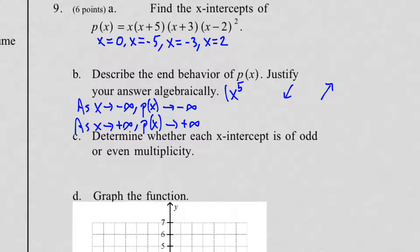Part C: determine whether each x-intercept is of odd or even multiplicity. Multiplicity means how many times that x-intercept occurs in your function. For example, x is to the 1st power, so x equals 0 occurs once. x plus 5 is to the 1st power, x equals negative 5 occurs once. x minus 2 is to the 2nd power, so x equals 2 occurs twice — that's even multiplicity. You're looking at the power of each original factor.